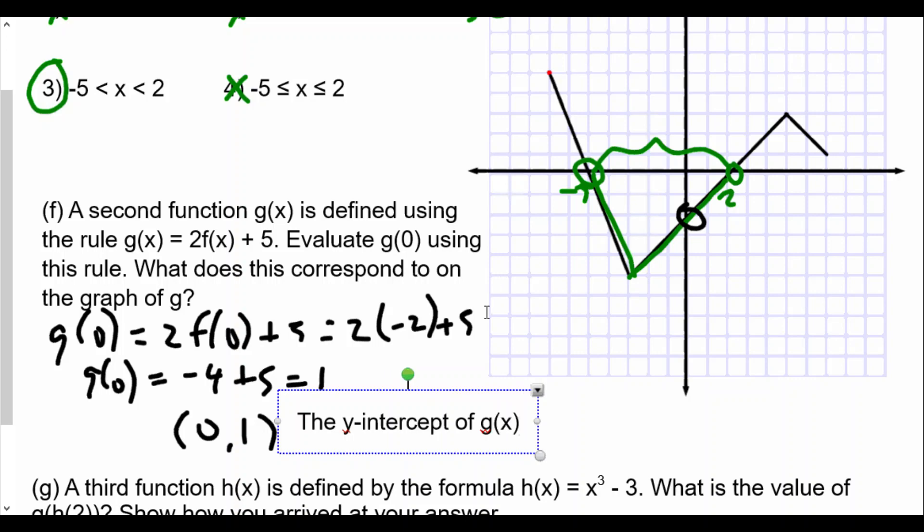This would be the y-intercept of g(x). Why? If you remember, the y-intercept is where the graph crosses the y-axis. The idea is that basically when x equals 0, y equals negative 2 on f, but when we plug everything in, we get (0, 1), which is the y-intercept of g(x). So that's what we're trying to say here. Not just any point, but that is going to be one of those special points on our graphs, x-intercepts, y-intercepts in this case.